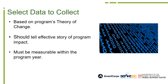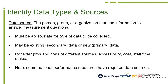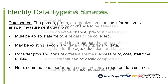Another key step is to make sure that the outcome data is measurable within the program year. Once you have identified the data you want to collect, the next step is to identify the sources of that information. Data sources include individuals, organizations, agencies, schools, local or state government, etc., that are able to answer your measurement questions. Create a list of as many data sources as possible, thinking about the pros and cons of each — quality, objectivity, and the type of change you are measuring. For example, students could be a source for knowledge increases, but a school provides greater quality and objectivity. Note that some national performance measures have a required data source if you opt into CNCS's national performance measures.